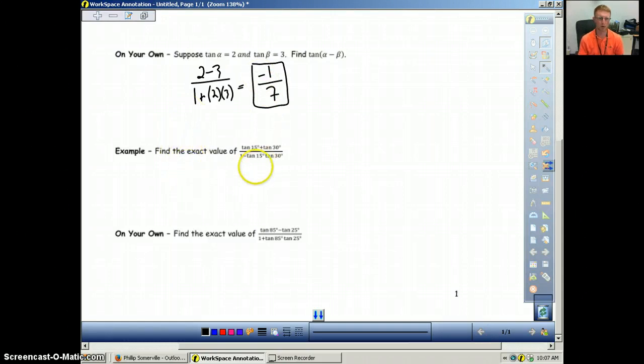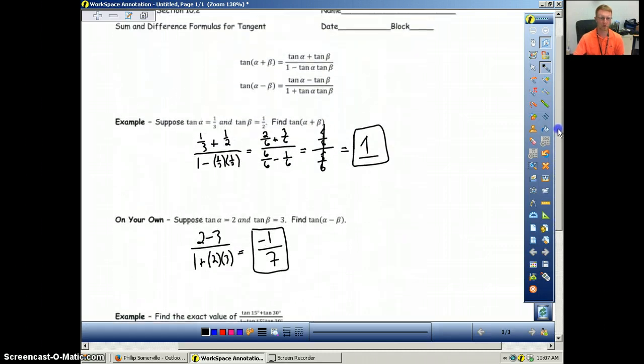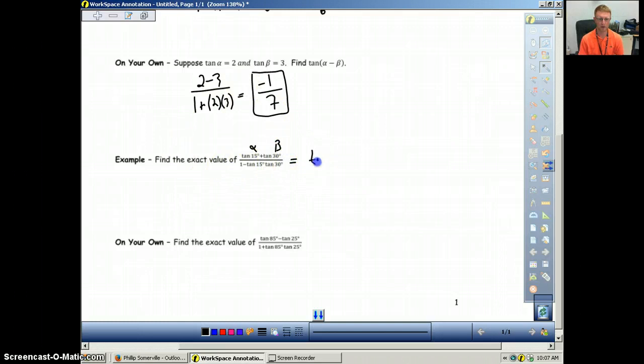Next example is kind of looking at it in reverse. So it says find the exact value and then it gives you something that is in the form of our sum and difference formula. We have tangent of 15 and tangent of 30. So basically what's happening is we're being told what alpha and what beta are going to be. So then we can just turn this into the tangent of, and instead of alpha plus beta, it will be the tangent of 15 plus 30, which is the tangent of 45.